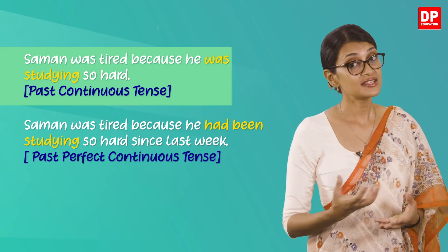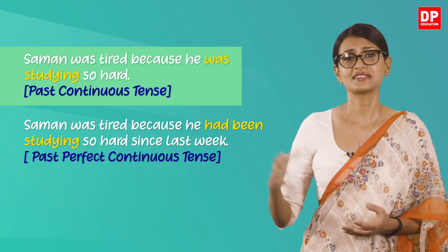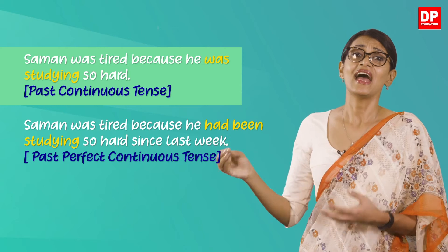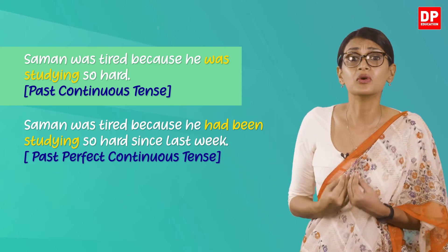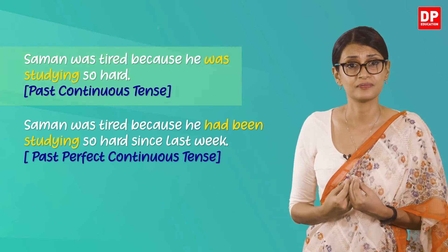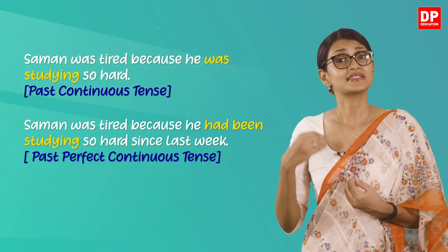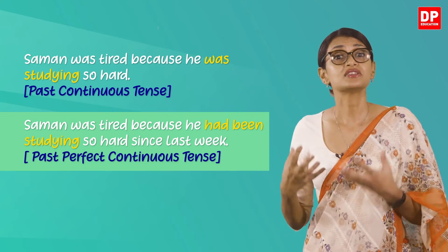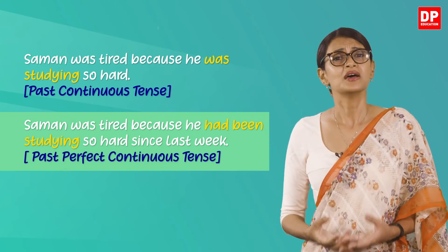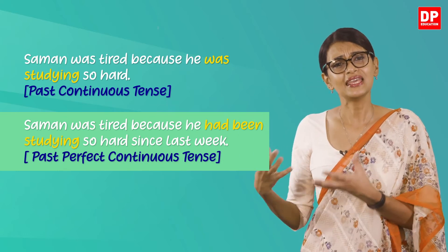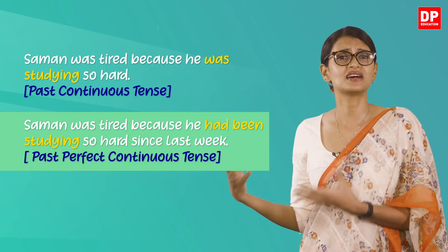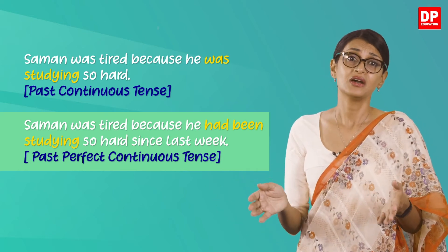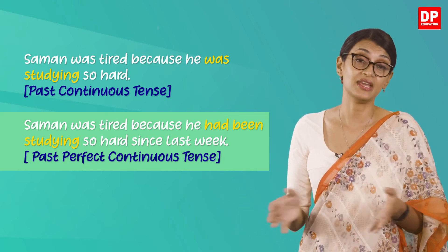The first sentence shows that someone was tired because he was studying at that moment, whereas in the second sentence we are told that someone was tired because he had been studying so hard for a period of time — a week, to be exact.